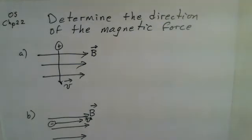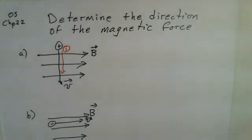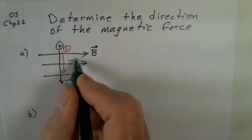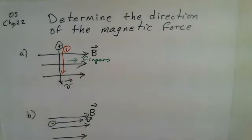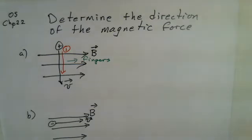With the right-hand rule, I start by putting my fingers in the direction of the velocity and then turn my wrist so I can easily bend my fingers into the direction of the magnetic field. I start fingers in the direction of the velocity, rotate my wrist so I can easily bend into the direction of the magnetic field, and my thumb is pointed up in this case.